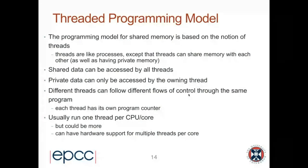We have these two types of data: shared data, which can be accessed by all threads that are running, and private data, which can only be accessed by the owning thread. In order to do useful things in parallel, different threads can follow different flows of control through the same program — every thread has its own program counter, its own notion of which instruction to execute next.